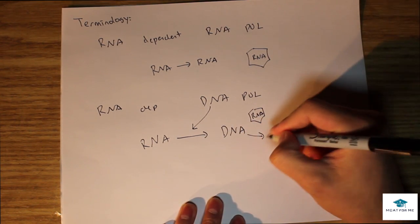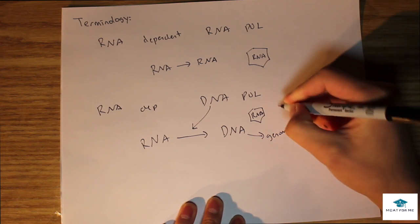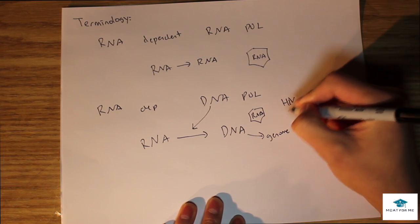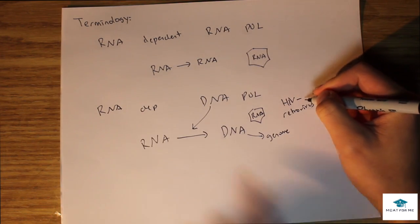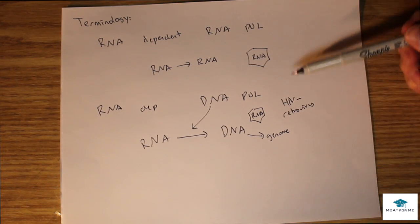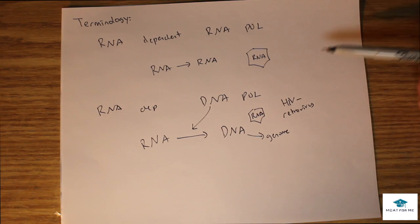What can you think that does this? A virus that has RNA but converts it to DNA and the DNA gets integrated into the genome. Well this is like HIV, a retrovirus. So that's the definition of retrovirus. If they ever ask you what's the definition of retrovirus, it's a has an RNA dependent DNA polymerase.